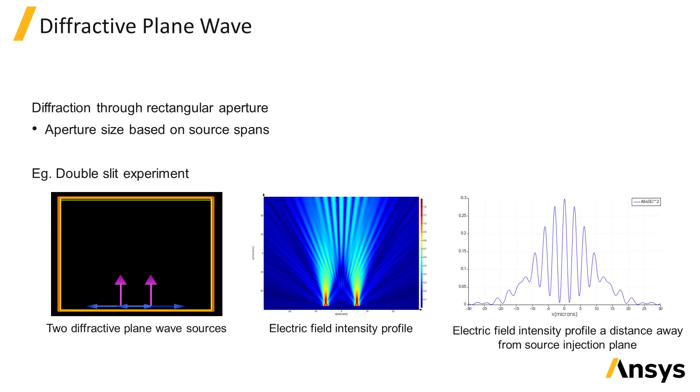In addition to using plane waves to represent infinitely wide sources, it's also possible to simulate a plane wave diffracting through a rectangular aperture of a given size. You can do this by using the diffracting plane wave source type, where the spans of the source determine the size of the aperture.